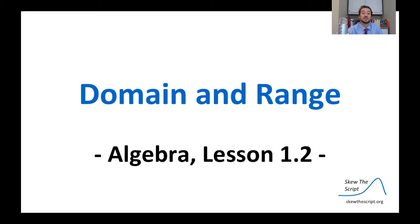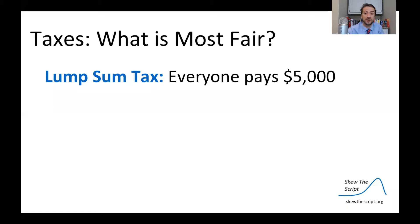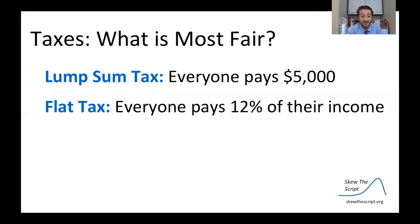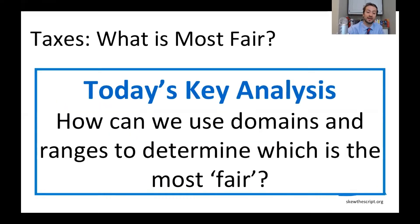Today we'll be talking about domain and range, specifically with taxes. You might not have had to pay taxes yet, but one day you will. Taxes are something citizens pay every year to the government — you work hard all year and then the government takes a chunk of it. Taxes allow the government to spend on a variety of things and make our society better. We'll be talking about three systems: a lump sum tax where everyone pays the same amount, a flat tax where everyone pays a specific percent of their income, and a progressive tax where the percentage increases for higher incomes.